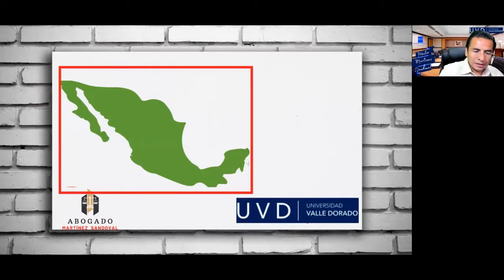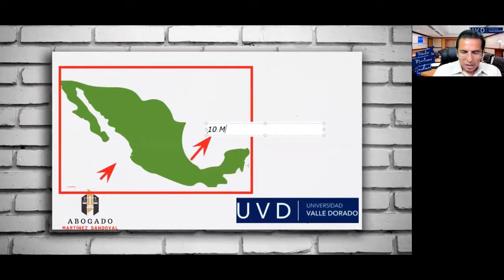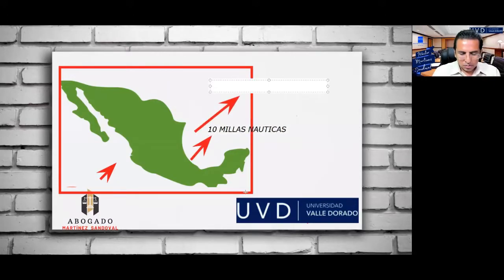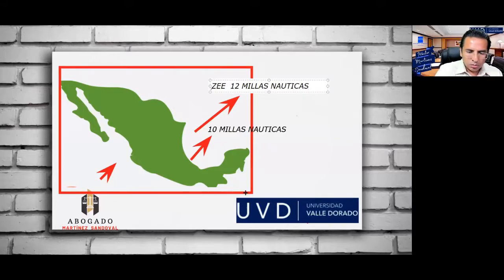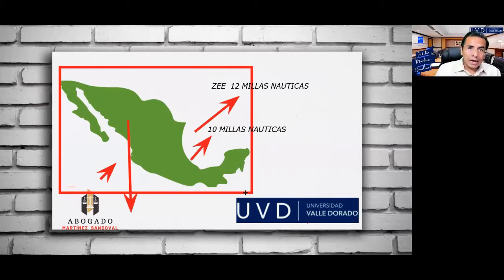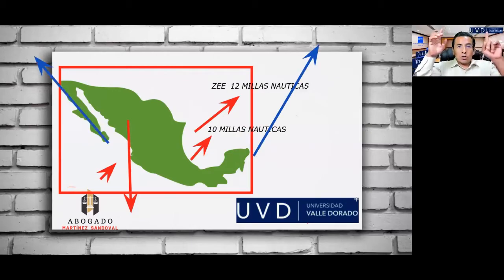El territorio incluye las islas, el mar territorial de diez millas náuticas, la zona económica exclusiva de 12 millas náuticas, el subsuelo de estas islas y millas náuticas, también los recursos que de ahí se obtengan, y se prolonga desde la superficie del territorio del estado hacia la estratosfera para el tema del espacio aéreo.